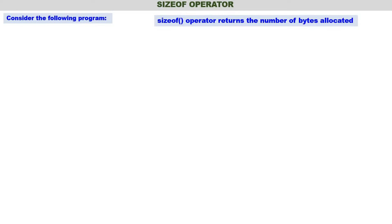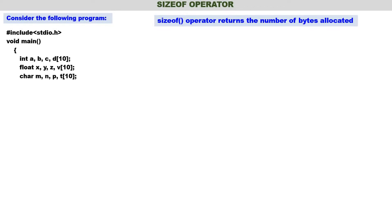Consider the following program. Here int a, b, c are integer variables. d is an integer array which can store 10 elements. x, y, z are float variables. v is a float array which can store 10 elements. m, n, p are character variables. t is a character array which can store 10 elements. We will also declare one structure. s1 is a variable of the type structure node. We have defined one structure and s1 is a structure variable.